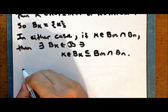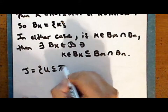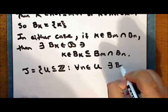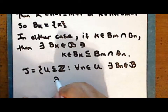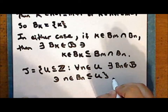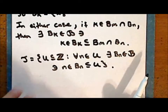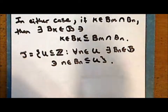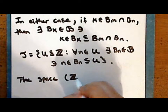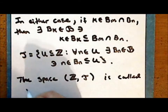The digital topology on the set of integers is defined to be all subsets of the integers where, for every integer in that subset, there exists an element b sub n in the collection script B such that that integer is in this element b sub n, which is a subset of the given set U. The collection script B is a basis for this topology, and the space consisting of the integers together with the digital line topology is called the digital line.